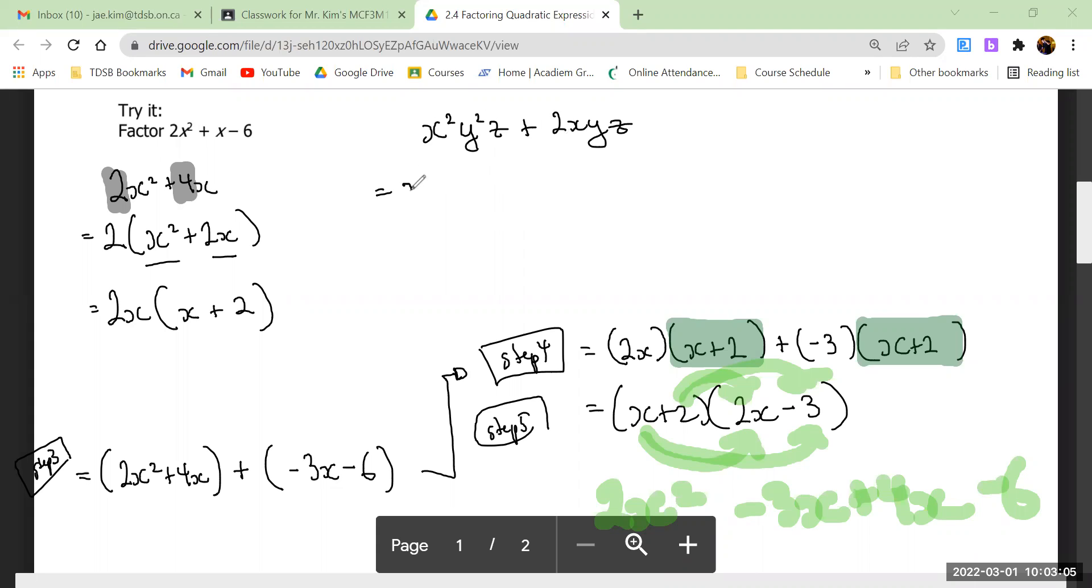So this is x(yz² + 2yz). Is that the only one? No. You can factor out a y as well: xy(xz² + 2z). Anything else? Is there a z? xyz(xz + 2).